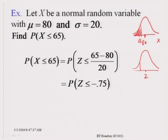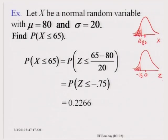That amounts to finding the area on the left of minus 0.75. The table does not provide this directly, so we find the area on the right of 0.75, which equals the area on the left of minus 0.75. We take the area on the left of 0.75 from the table and subtract that value from 1 to get the answer.